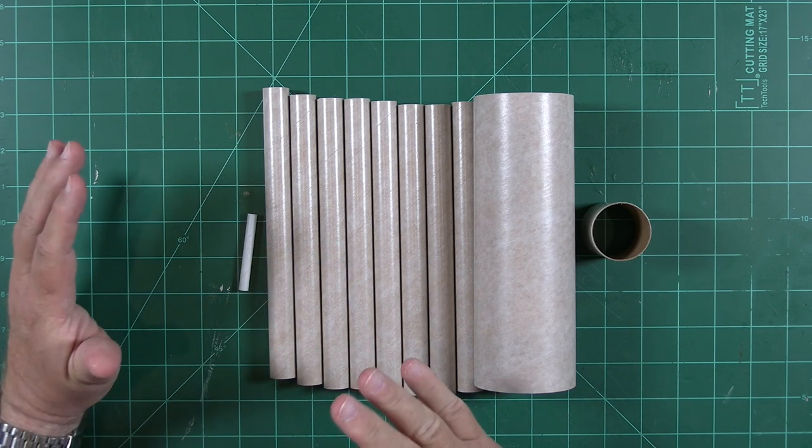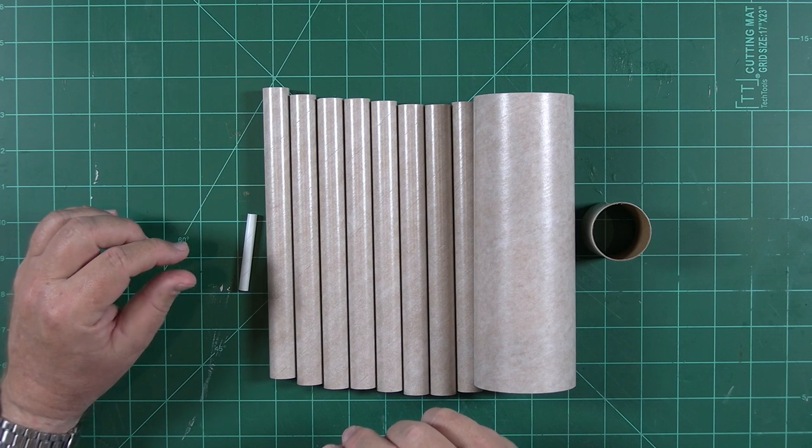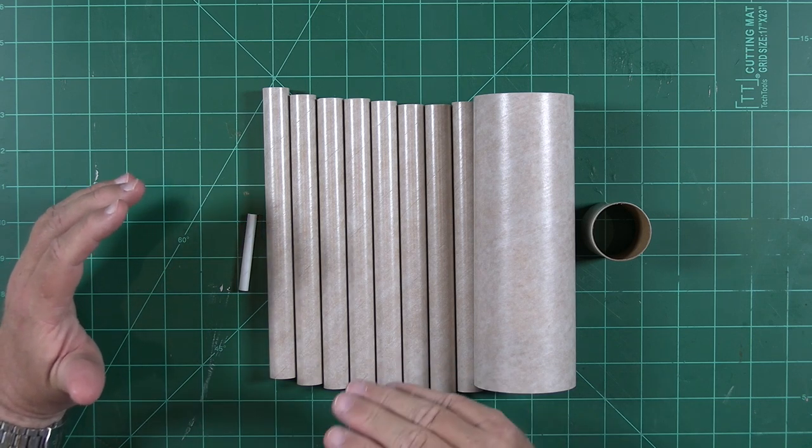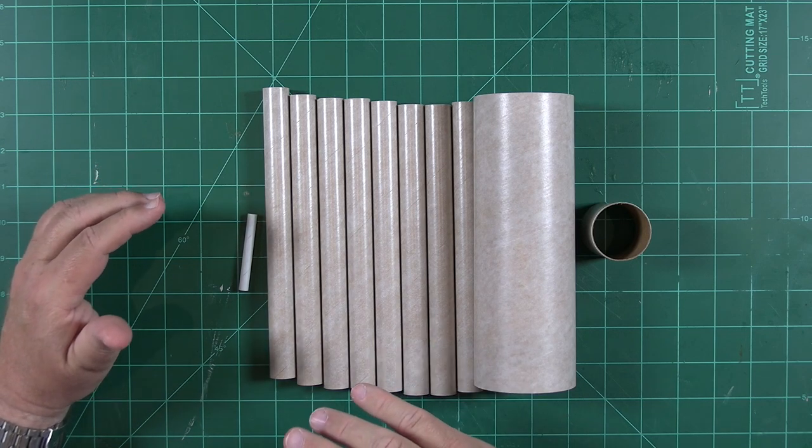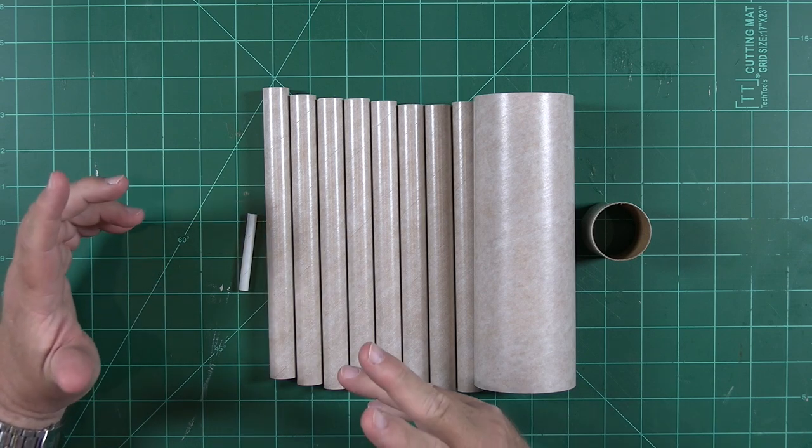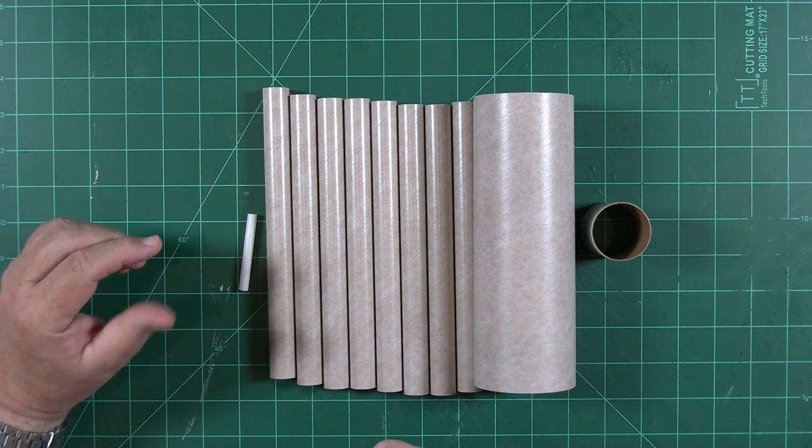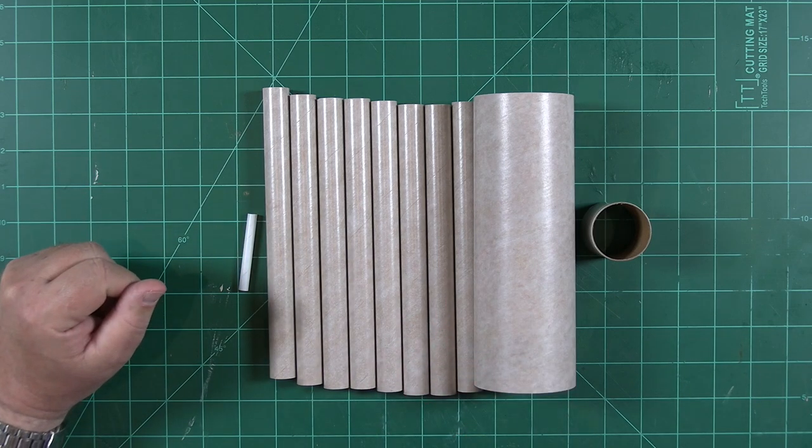The process is simple. Each tube will get a couple of coats of primer applied with no more than five to seven minutes between coats. We'll let the tubes dry for a few hours. Then we'll sand off most of the primer and repeat the process. Your dry time may be shorter or longer depending on the humidity in your area.